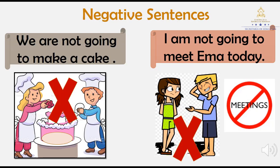Let's continue with the negative sentence. We are not going to make a cake. Repeat. We are not going to make a cake. One more time please. We are not going to make a cake. Next example: I am not going to meet Emma today. Repeat please. I am not going to meet Emma today. One more time. I am not going to meet Emma today.